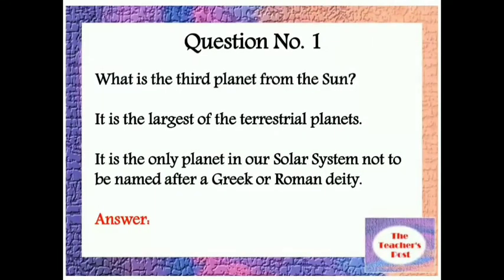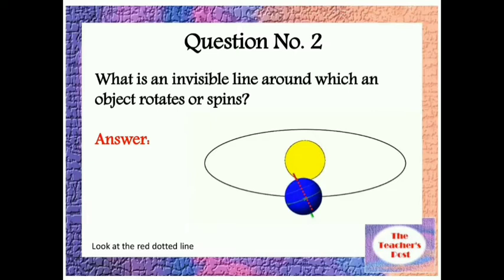Question number one: What is the third planet from the Sun? It is the largest of the terrestrial planets. It is the only planet in our solar system not to be named after a Greek or Roman deity.